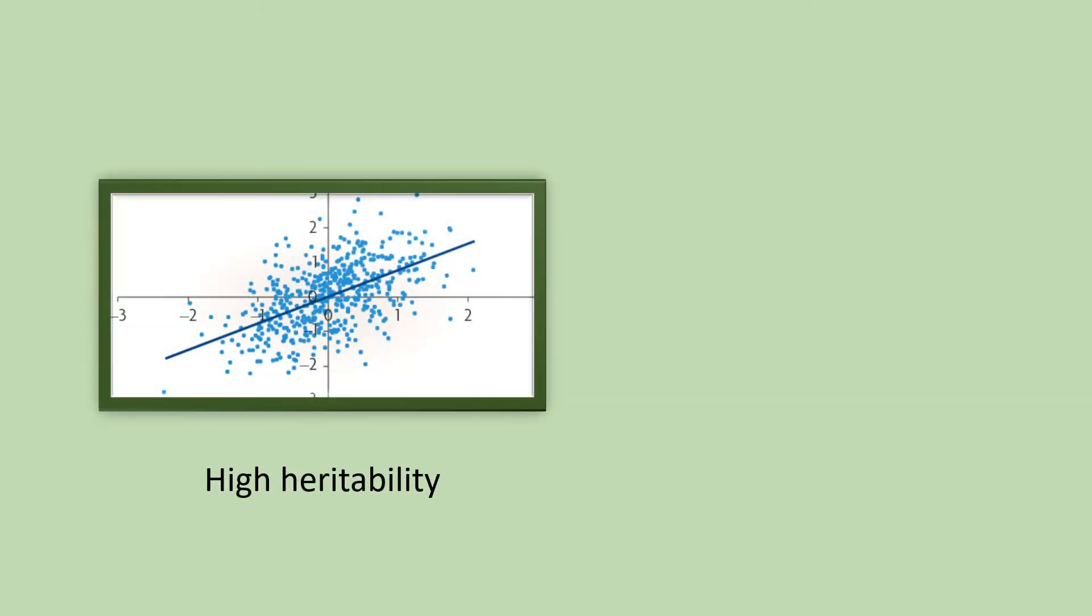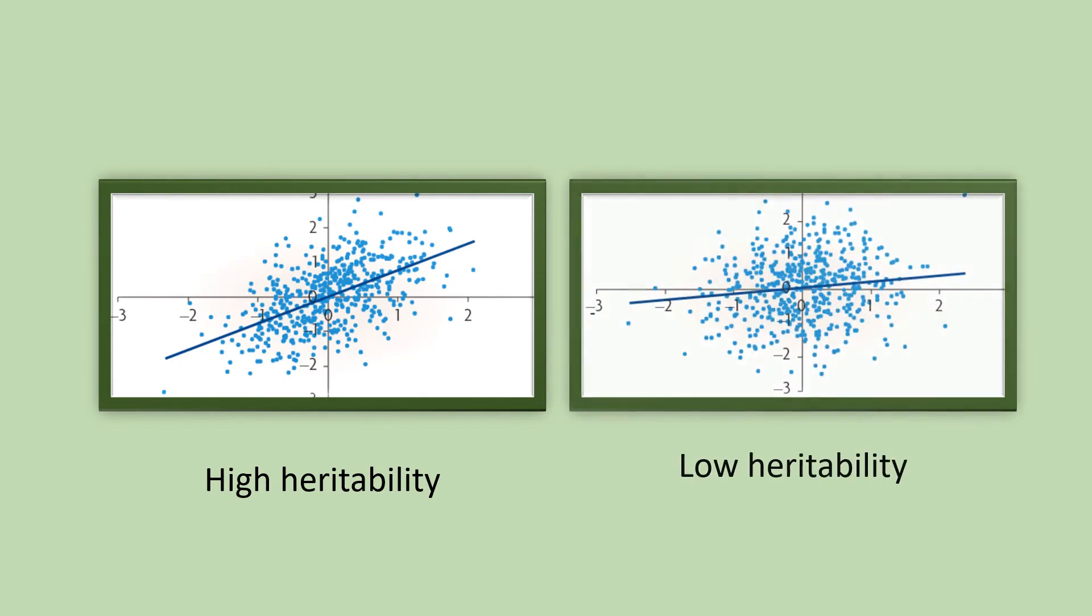A parent-offspring regression with a steep slope means that there is high heritability of the trait. And if we know the phenotype of the parent, we can easily and reliably predict the offspring phenotype. Whereas a flat slope means that the trait has low heritability in the studied population, and we cannot reliably predict the offspring phenotype simply by knowing the parent's phenotype.